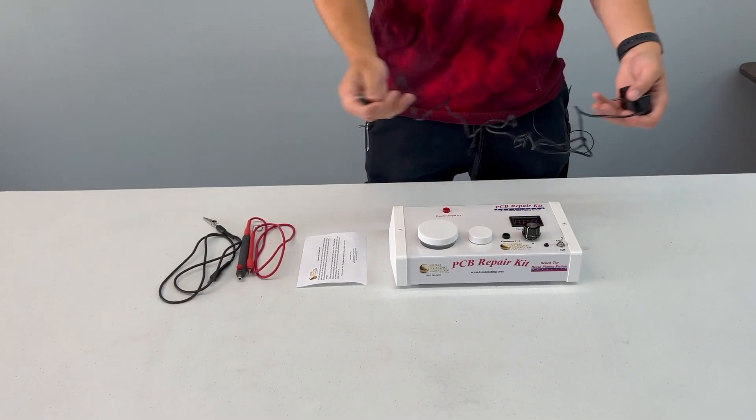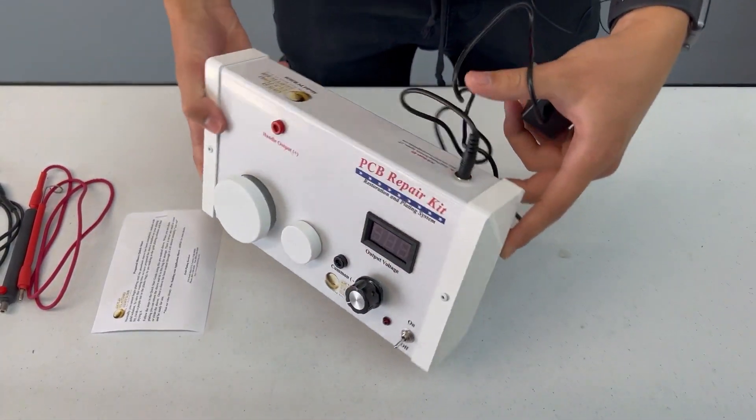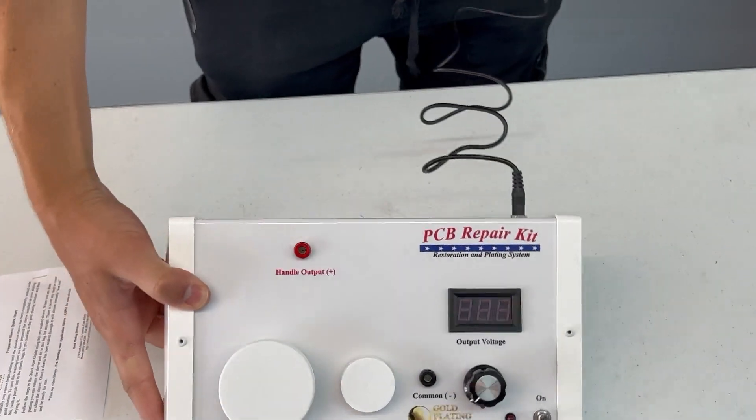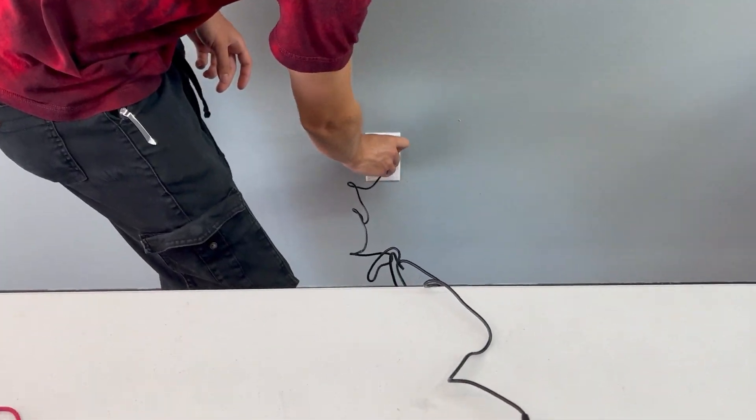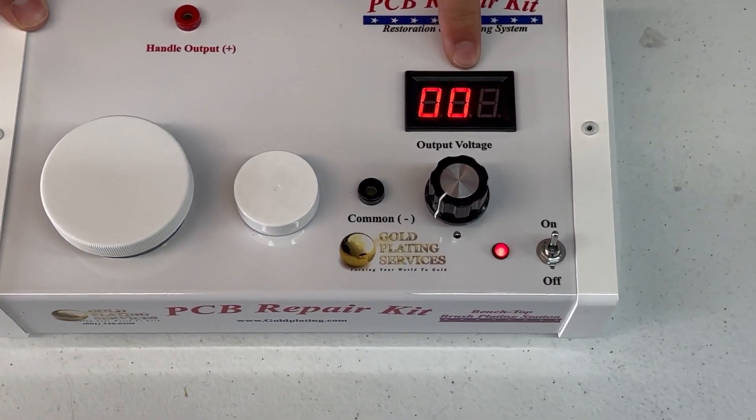So let's get this machine plugged in. We'll plug it into the back right here into this outlet, have it plugged into the wall. And when you turn on this machine, that is our voltage. It's probably flashing in the video.